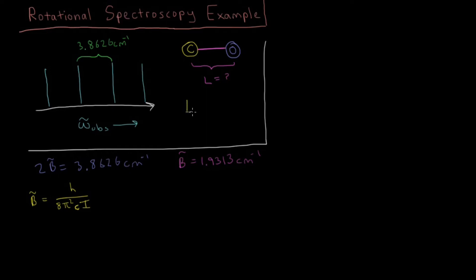But we also know that I, the moment of inertia, equals μL², the reduced mass of these two atoms times the bond length squared. So that means we can say that this also equals h over 8π²c μL².